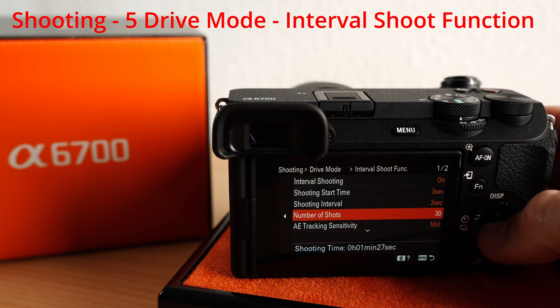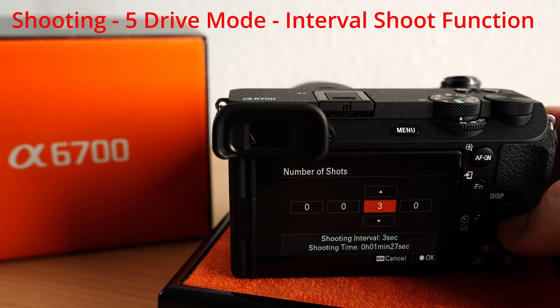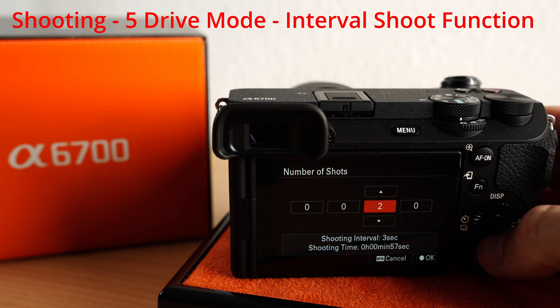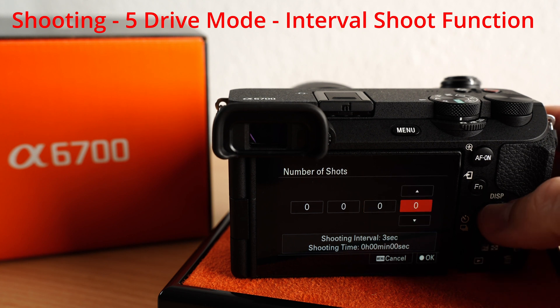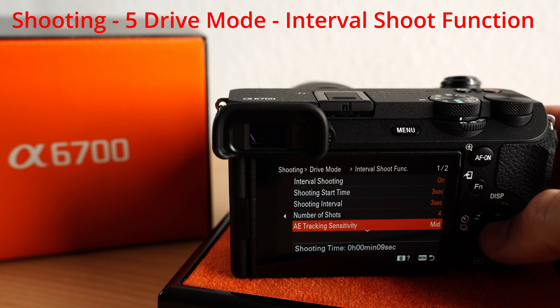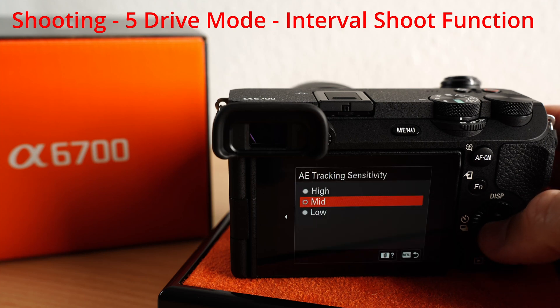The number of shots is the amount of frames of your total timelapse sequence. The AE tracking sensitivity adjusts the exposure time in defined steps — that's interesting for sunrises and sunsets.